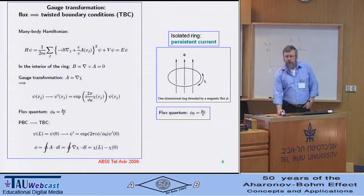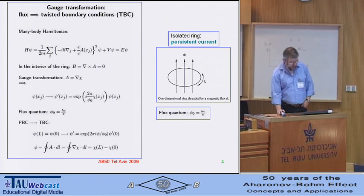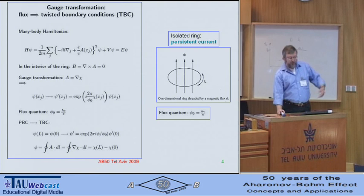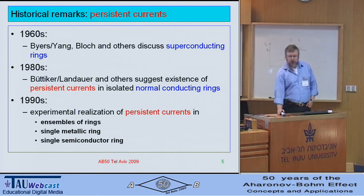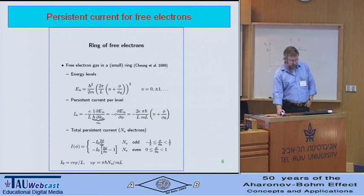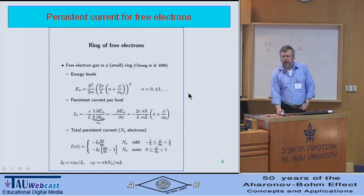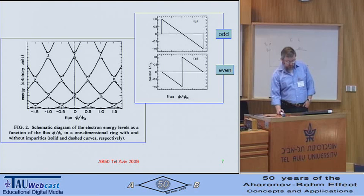A flux translates into twisted boundary conditions. I can make use of results from my previous speakers who already pointed out all the results I need. Just to get a baseline, I will remind you of the persistent current of free electrons, not in formulas but as pictures — the typical sawtooth behavior of the persistent current as a function of magnetic flux.